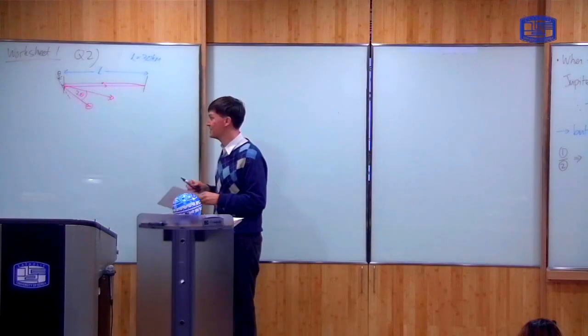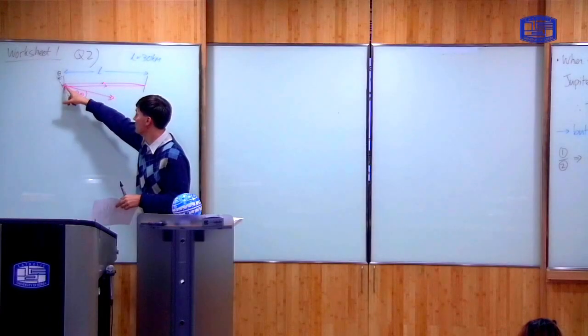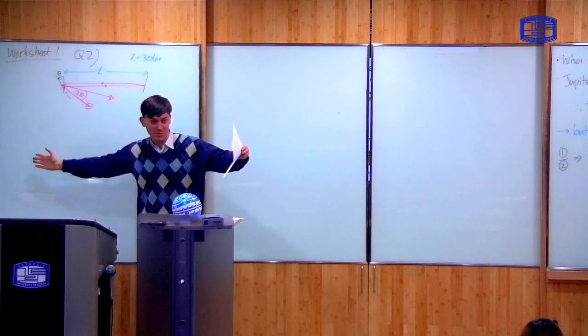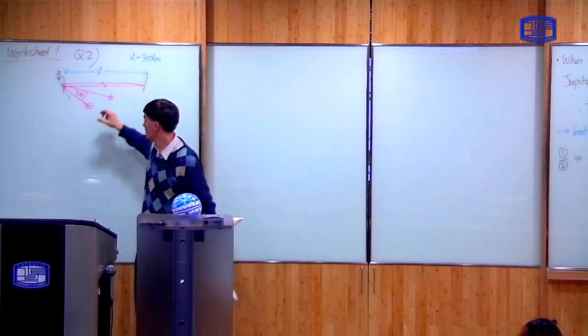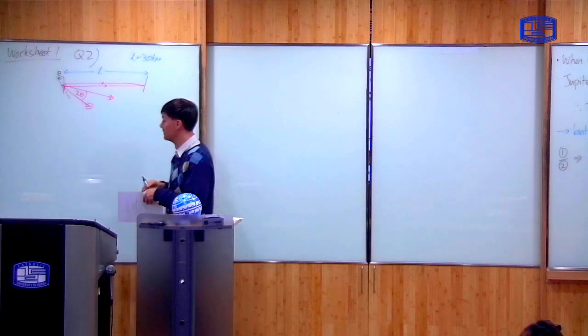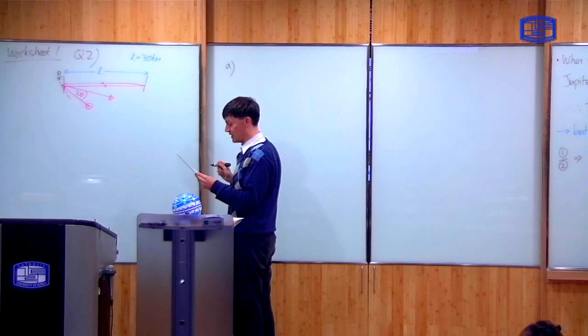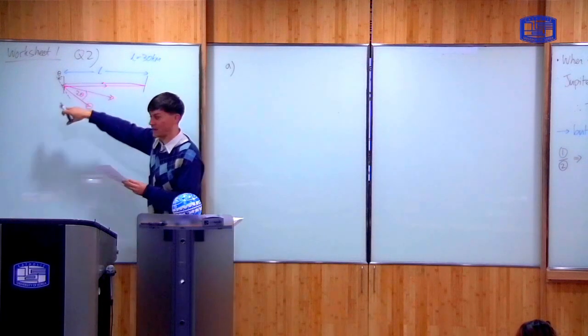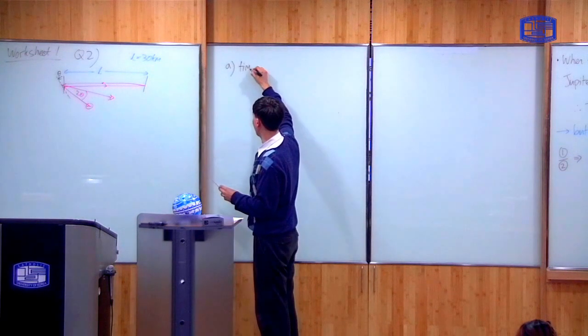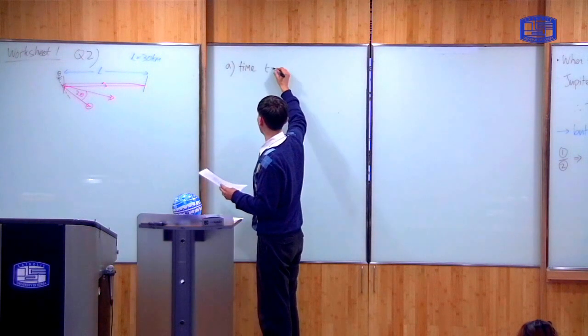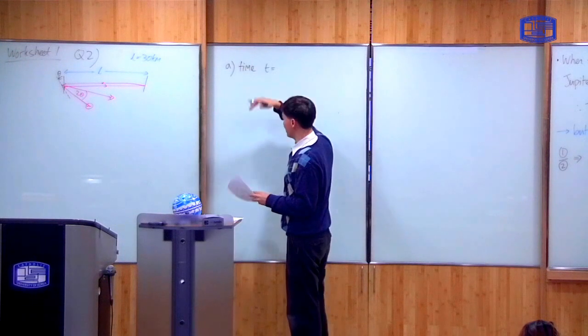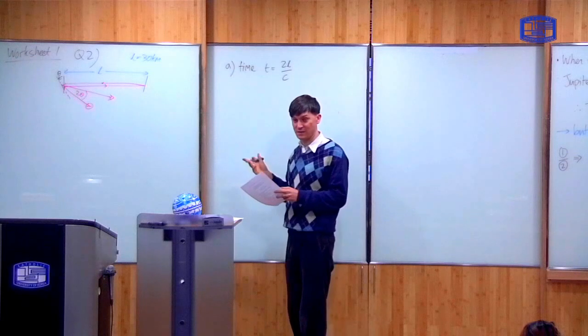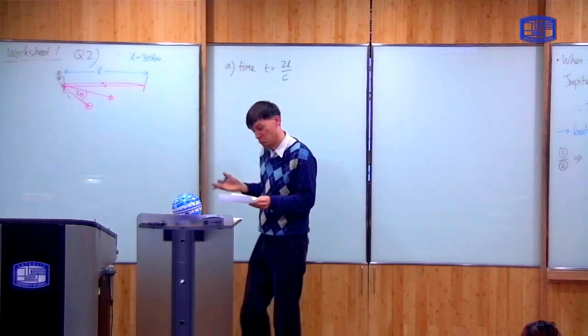So the key thing in this experiment is how much time does it take for the light to go from here to there. Because that determines how much the mirror rotates, which determines the angle you measure here. So that's part A of the question. Find the time that it takes for the light to go from here and back. And that's very easy, right? Because it's just time is distance divided by speed. The distance is 2L. Speed of light is C. That easy.